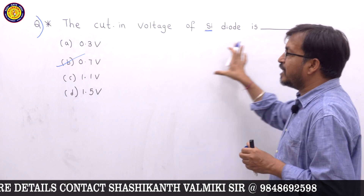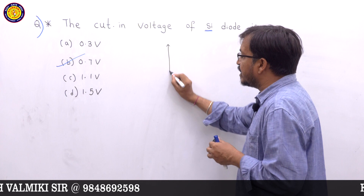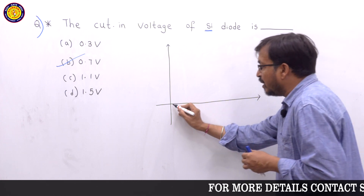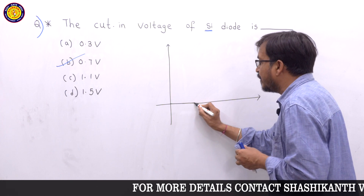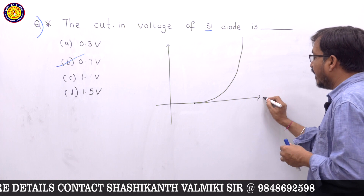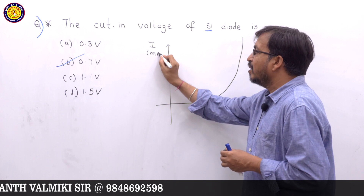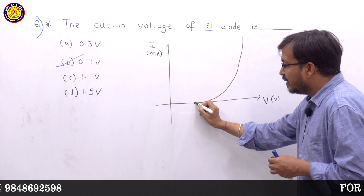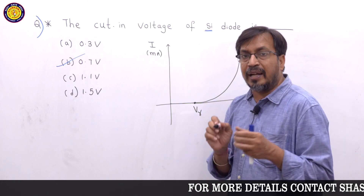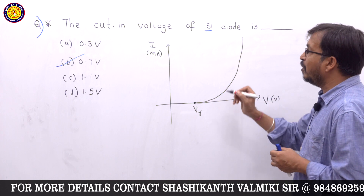The cutting voltage of silicon diodes is 0.7 volts. Cutting voltage is what we need when the diode is in forward bias. Here, the x-axis represents voltage and the y-axis represents current — current units are milliamperes and voltage units are volts.